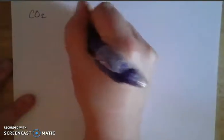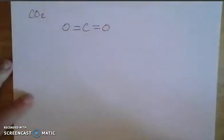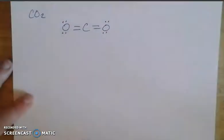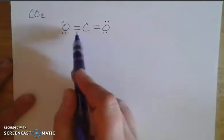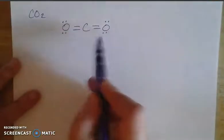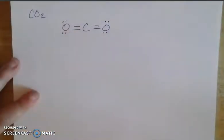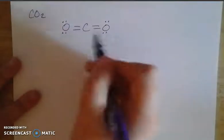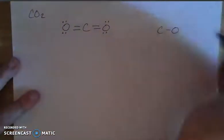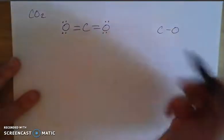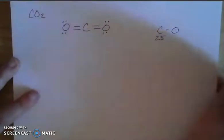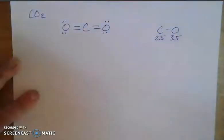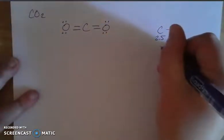In CO2, carbon is at the center with its four valence electrons, sharing two pairs with each oxygen, which also have two lone pairs. The Lewis structure is also the VSEPR structure because it's linear, with a 180 degree angle. The oxygens are on opposite ends of the central atom. For the carbon-to-oxygen bond, carbon is 2.5 and oxygen is 3.5, giving a difference of 1.0, which means it's a polar bond.